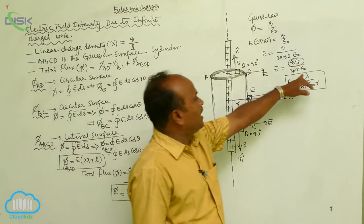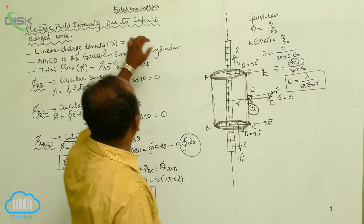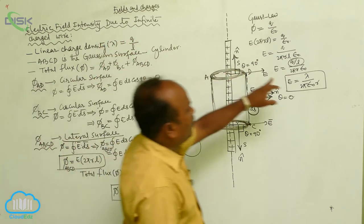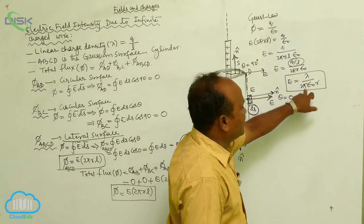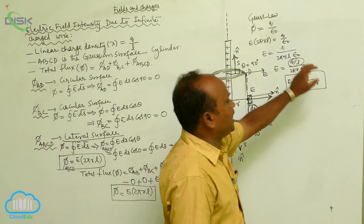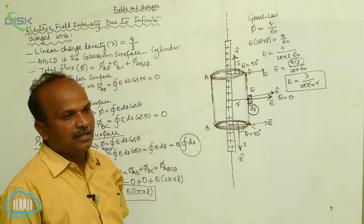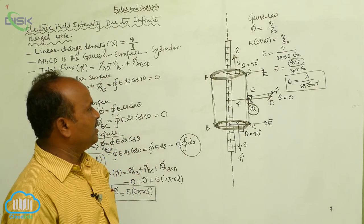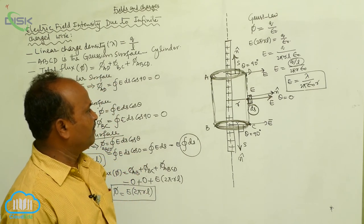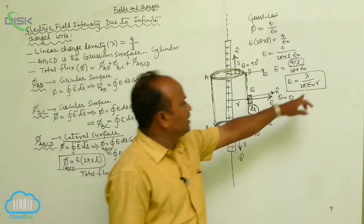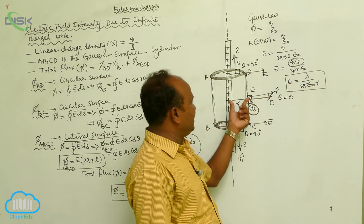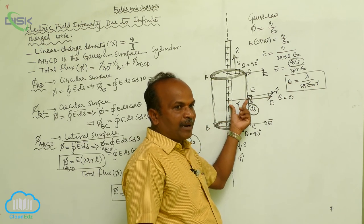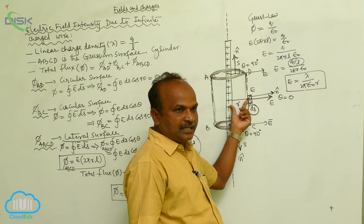Here, lambda is the linear charge density, 2·pi is a constant, epsilon-naught is the electrical permittivity of air, and r is the radial or perpendicular distance from the line charge.